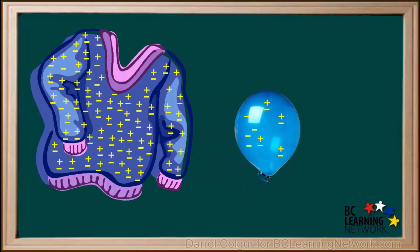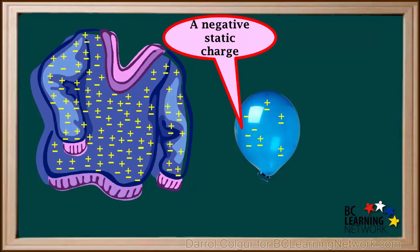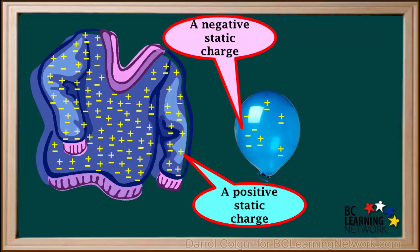And when the balloon is taken away, it has acquired a negative static charge because it has an excess of electrons. And the sweater, which has lost electrons, has acquired a positive static charge.